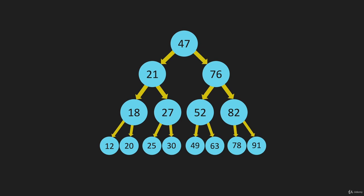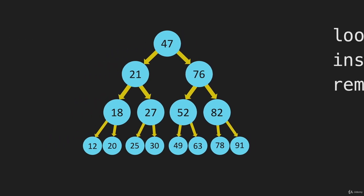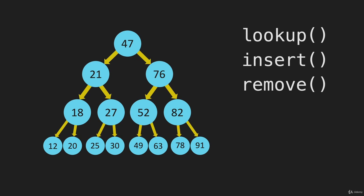Our best possible scenario is O of log N. And since we're probably going to be somewhere in the middle, we treat this as if it is an O of log N data structure. So for lookup, insert, remove, this is effectively O of log N.